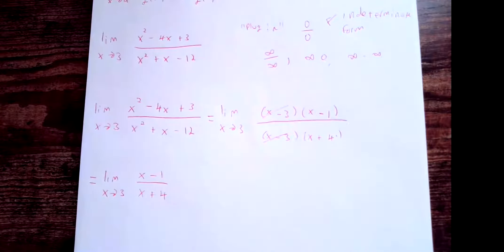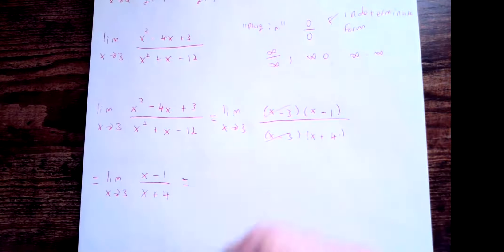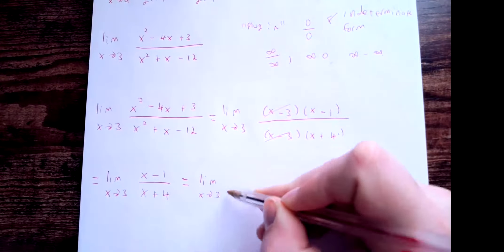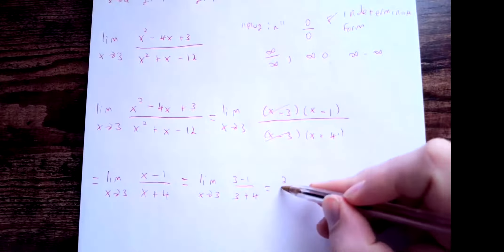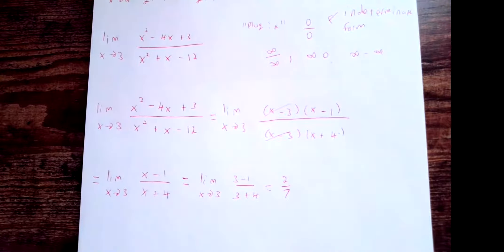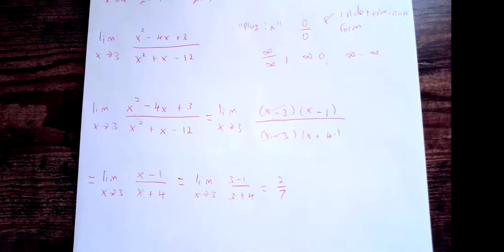Now (x − 1)/(x + 4) is continuous at x = 3, because every polynomial is continuous and a ratio of polynomials is continuous as long as the denominator is nonzero. So we can calculate the limit just by plugging in: (3 − 1) over (3 + 4) = 2/7. The limit of the original expression as x goes to 3 is 2/7, even though it was an indeterminate form.